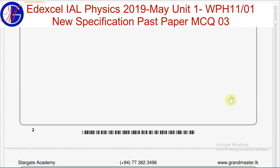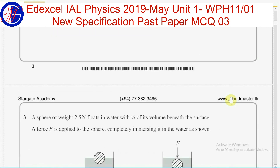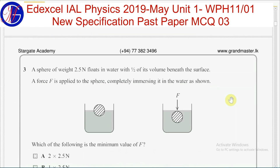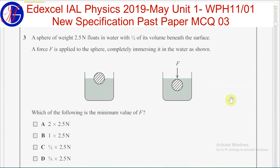Third question. A sphere of weight 2.5 N floats in water with half of its volume beneath the surface. A force capital F is applied to the sphere, completely immersing it in the water as shown. Which of the following is the minimum value of F?